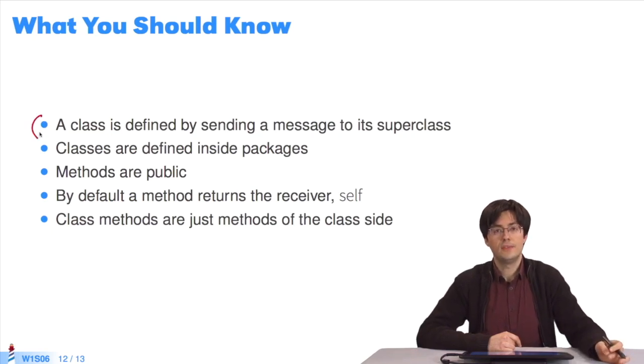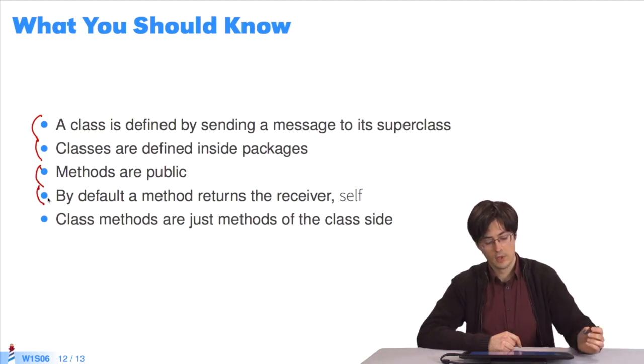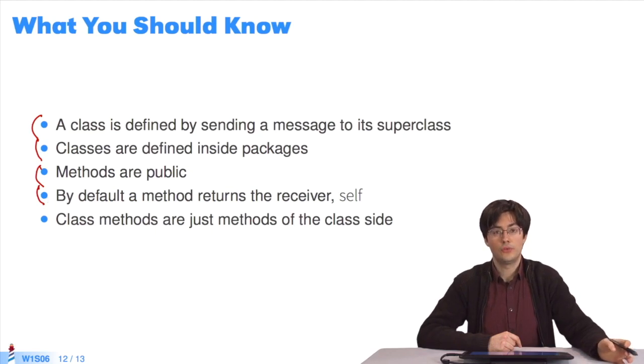What you should remember from this lecture: A class isn't defined by a particular syntax, but by sending a message to its superclass. Classes are defined inside packages, the names of which are passed as parameters of the message. All methods are public. There's no keyword to indicate that a method is public. They all are. There's no notion of it being protected or private. By default, a method returns the receiver, which is self. You can use the caret to return something other than self. And class methods are methods like any other. To add them, press the button class before creating the method.